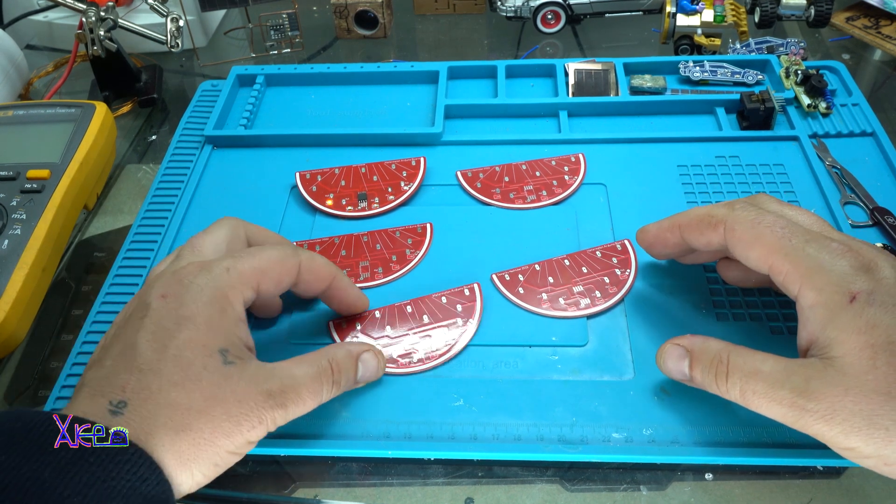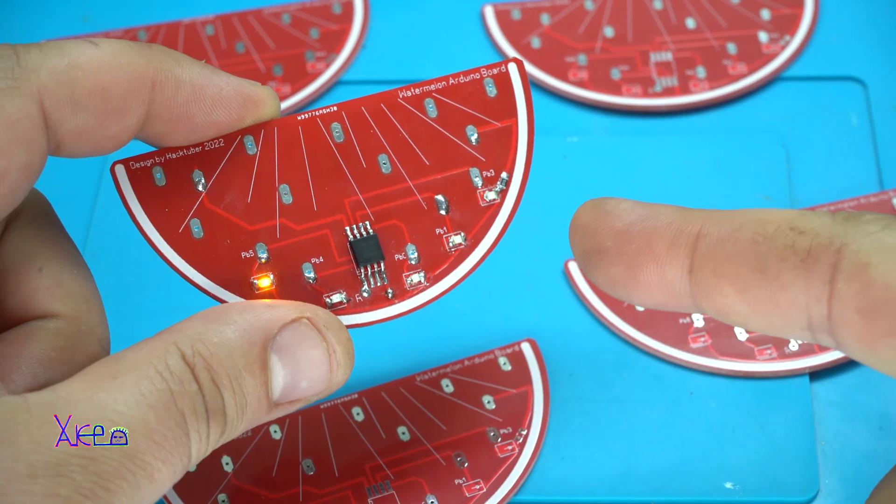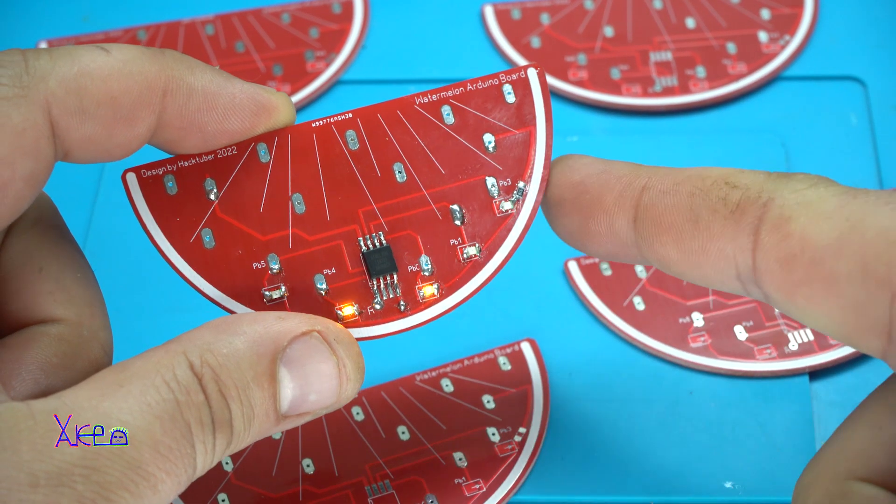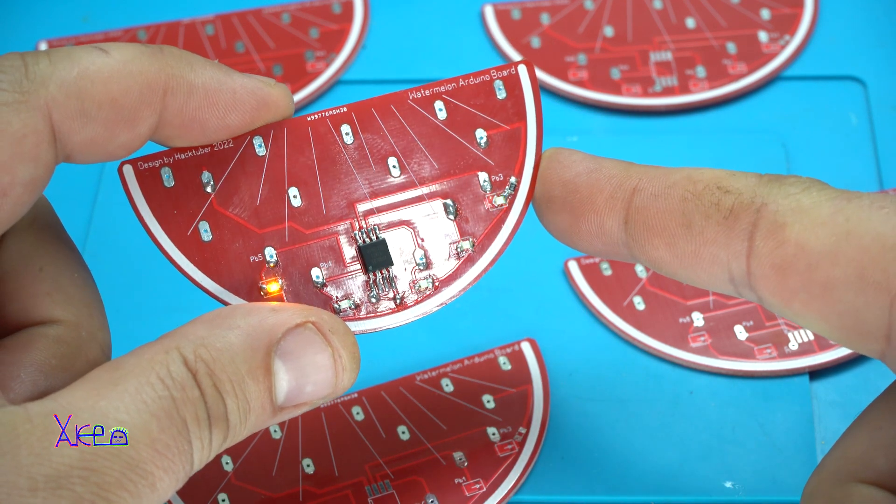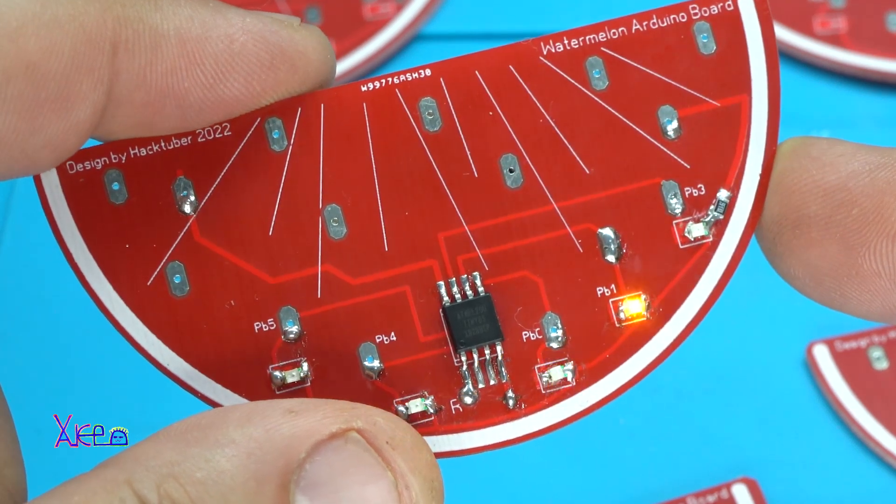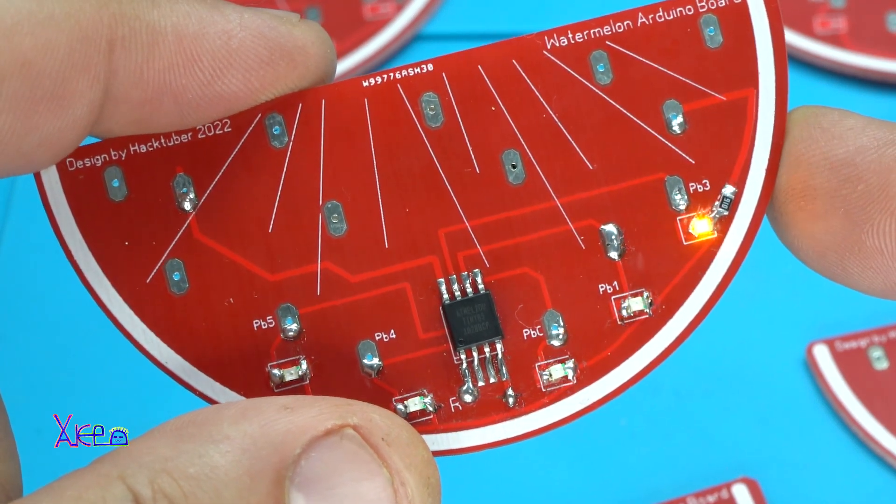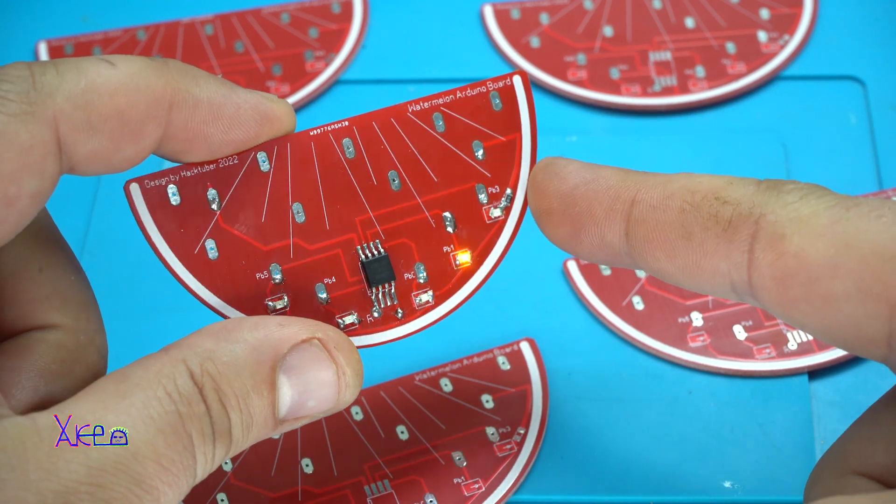Hello Hurtubers and welcome back to my channel. This red printed circuit board is my newest and latest DIY Arduino based project. And guess what? It's a crazy one. Watermelon Arduino board. Yup.